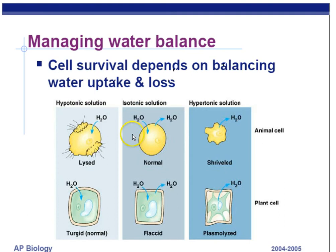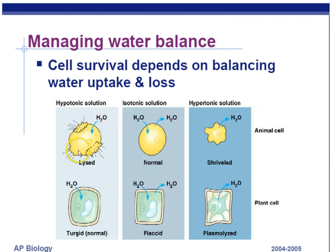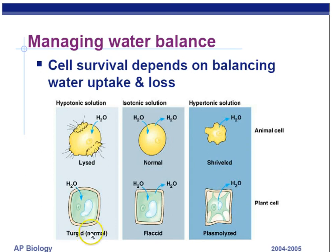If a cell is placed in a hypotonic solution — less solutes, more pure water outside — the water goes from more pure to less pure by osmosis, increases the size of the cell, and eventually the cell bursts. Freshwater organisms have a contractile vacuole to prevent them from lysing. Plant cells have a cell wall so they don't burst; they become turgid or rigid, and plants do well in fresh hypotonic solutions — that turgidity is one reason why plants don't fall over.